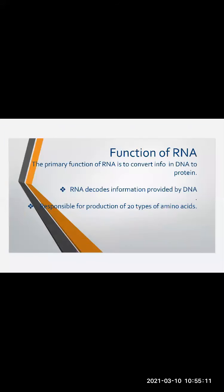The primary function of RNA is to convert information in DNA into protein. RNA decodes information provided by DNA. DNA gives the order for the type of protein that needs to be synthesized, and it is the RNA that decodes that information. RNA is responsible for the production of 20 types of amino acids, which are the building blocks of protein.